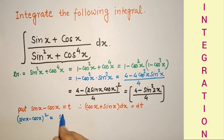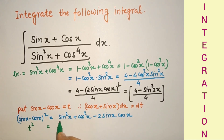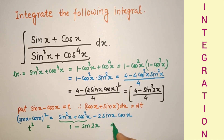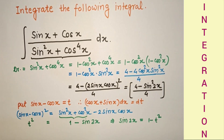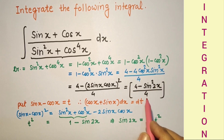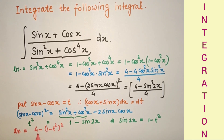If we square t, we get sin²x + cos²x − 2 sin x cos x = t². Since sin²x + cos²x = 1, we have t² = 1 − sin 2x, so sin 2x = 1 − t². Therefore the denominator (4 − sin²2x)/4 becomes (4 − (1 − t²)²) / 4.